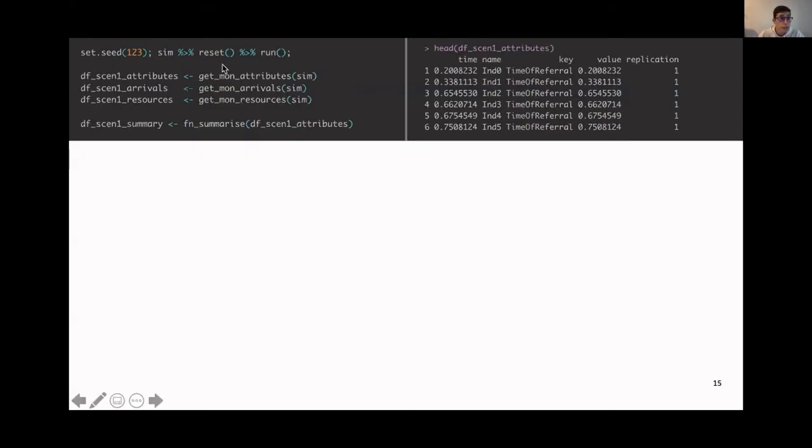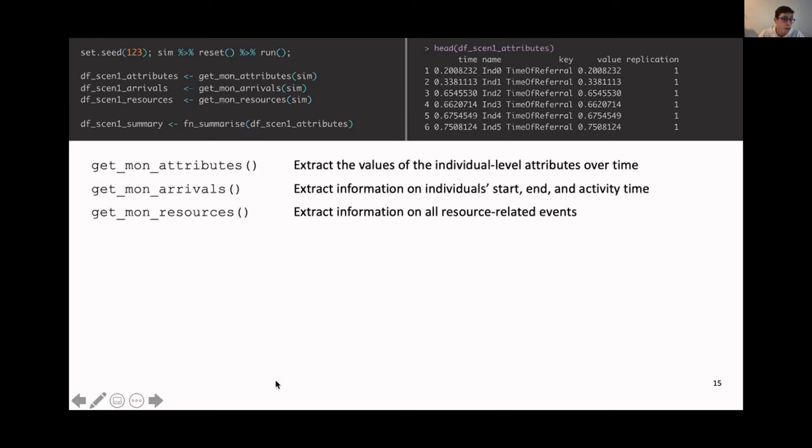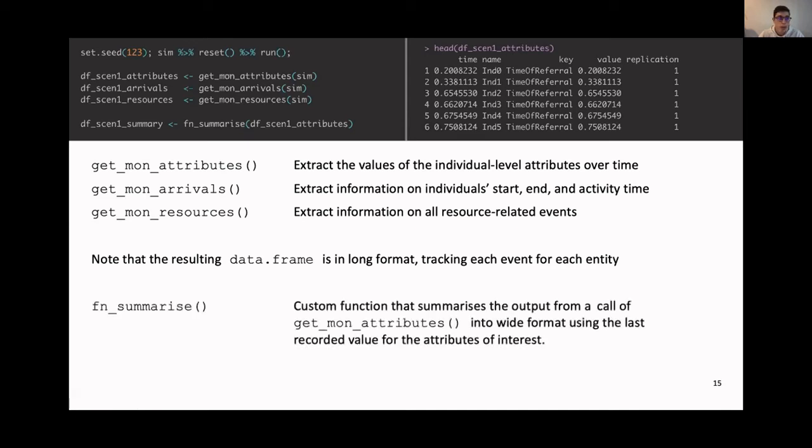Then we can run our simulation and extract the attributes, the arrivals, and resources from the simulation environment. And as you can see on the right, the resulting data frames are in long format. So for every individual, for everything that happens, there is a row, which is great in level of detail, but usually, we only just want to have, for our final outcomes, a row per individual. So in the code, you will also find this custom function that conveniently summarizes the monitored attributes into the last recorded value per individual.